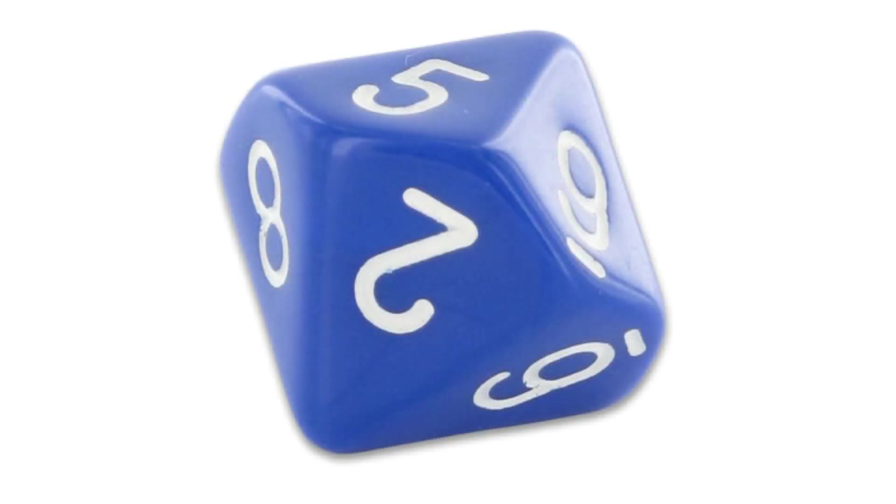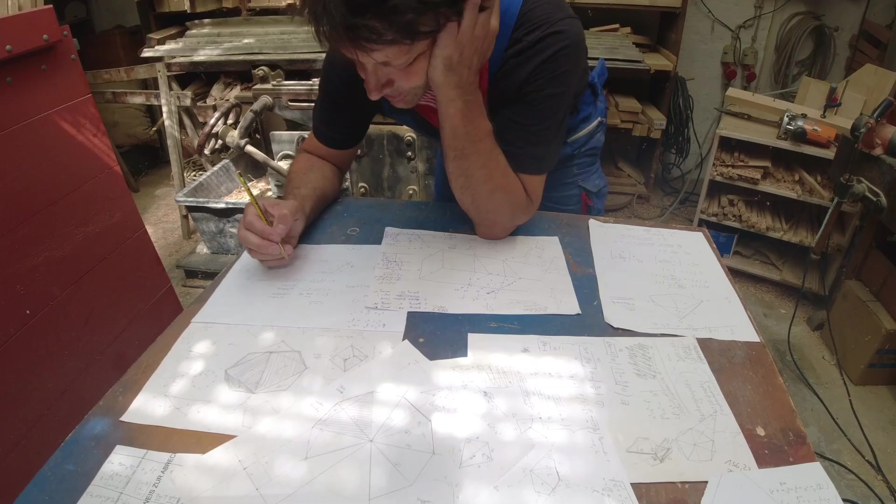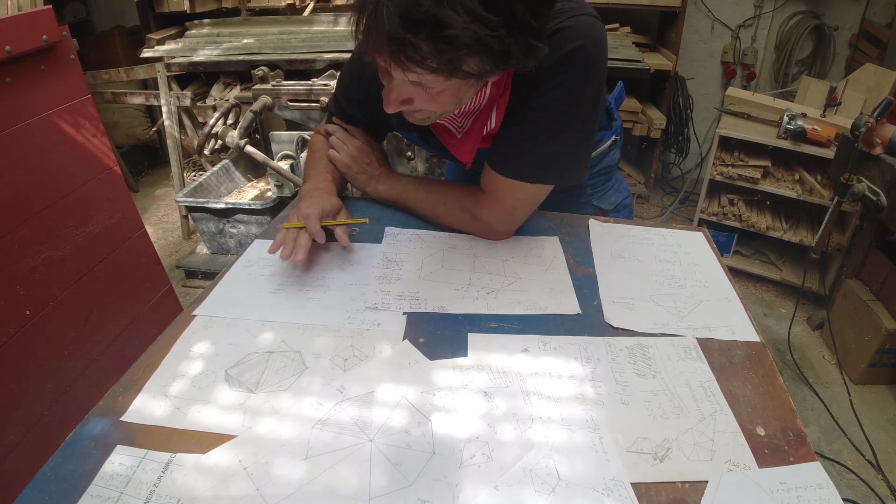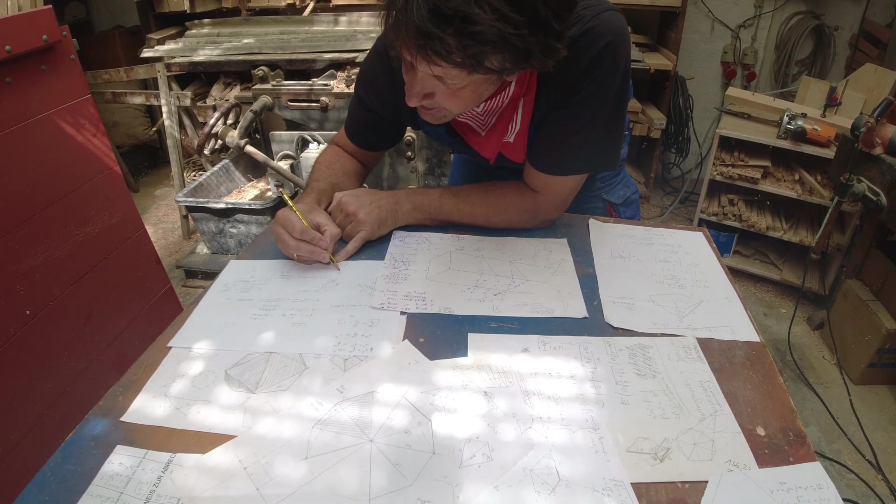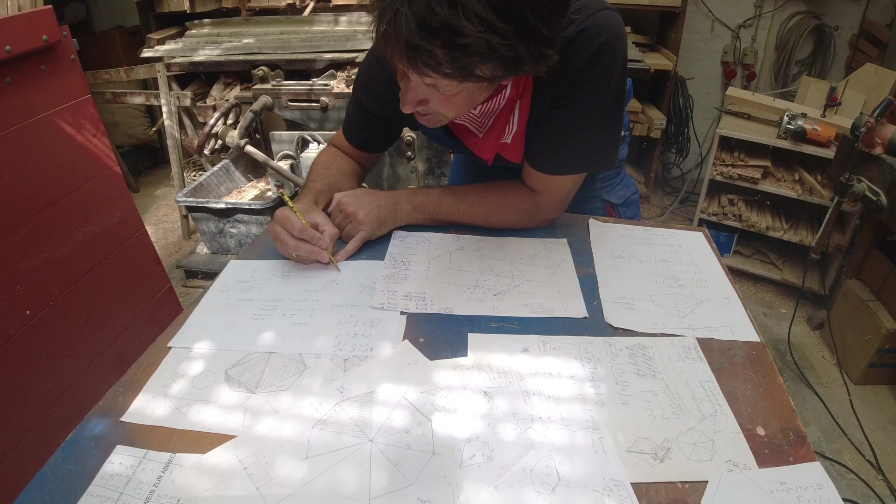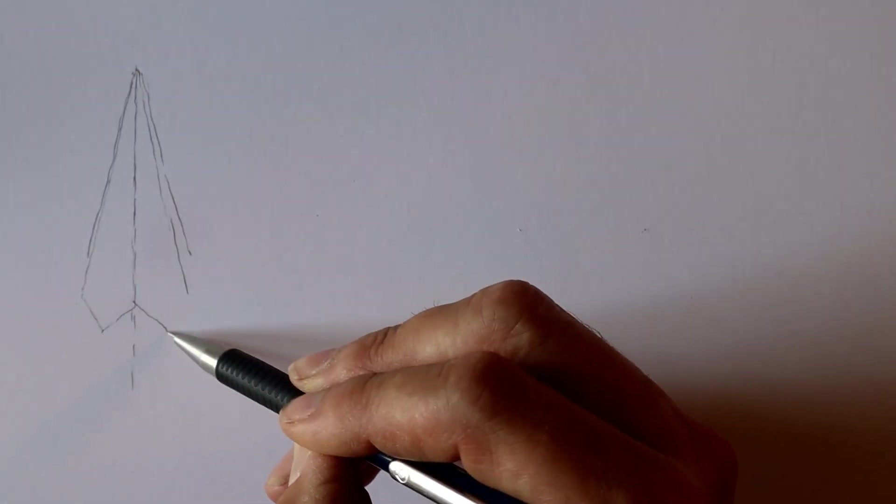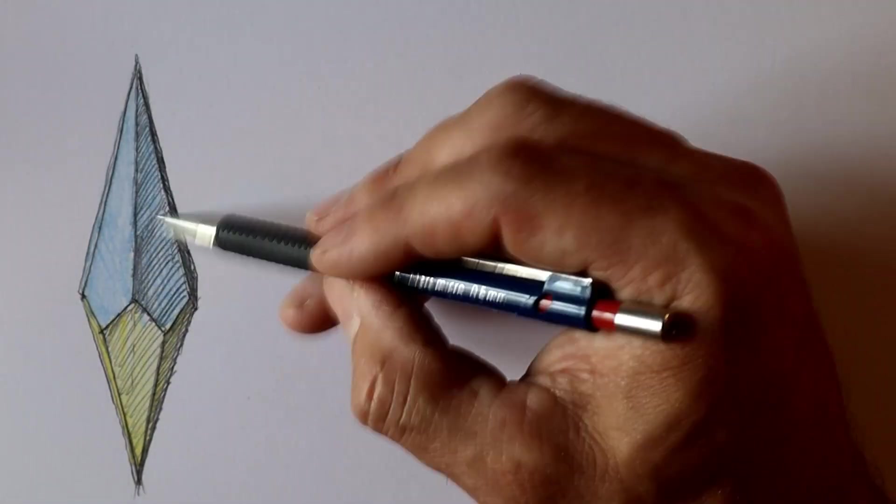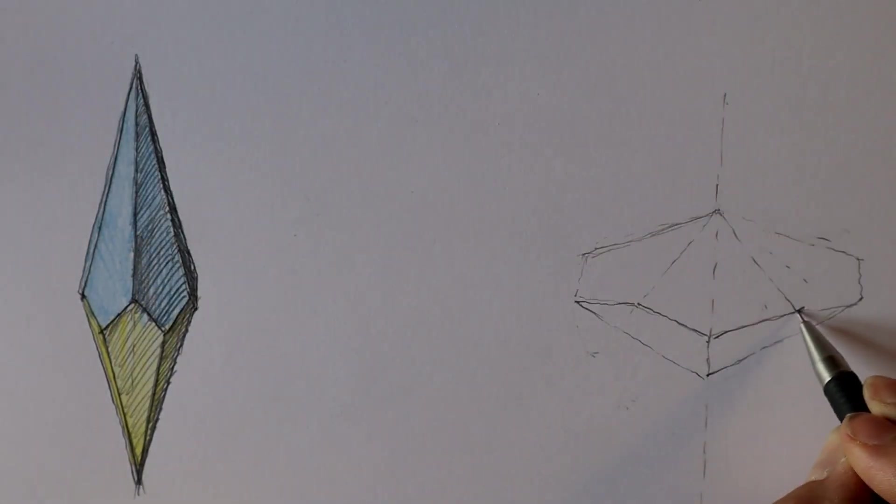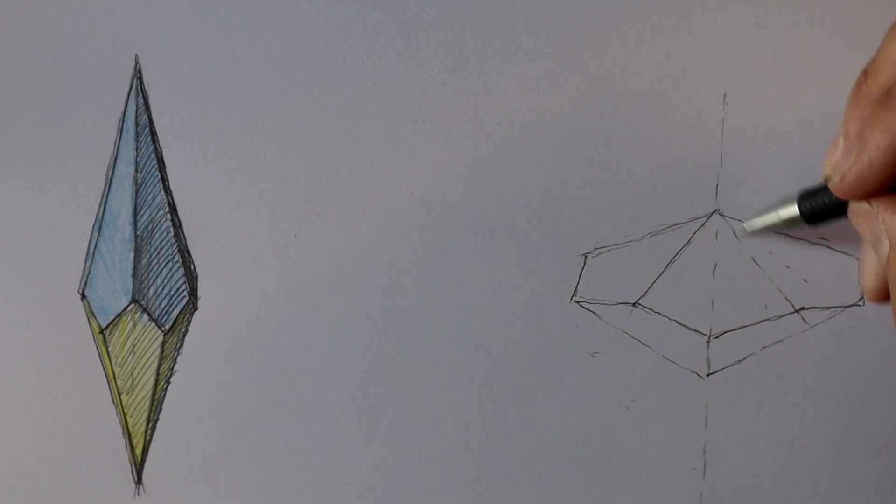Recently I came across a pentagonal trapezohedron as a ten-sided dice and I noticed some geometric features that made the thing special. I wanted to make one out of wood but first I had to understand what was important. Pentagonal trapezohedrons can vary in height. One can imagine tall and slender ones but also flat ones.